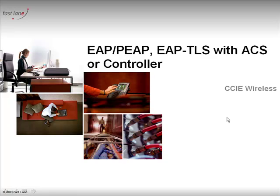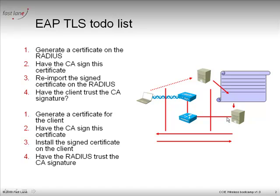Hi, I'm Jerome from Fastlane. Welcome to the series on the Cisco Unified Wireless Networking solution. This is the third video dedicated to EAP, PEAP, and EAPTLS configuration on the Cisco wireless infrastructure. In the first two videos we explained how EAP, PEAP, and EAPTLS work, and in the third video we're going to configure the RADIUS server for EAP, PEAP, or EAPTLS authentication.